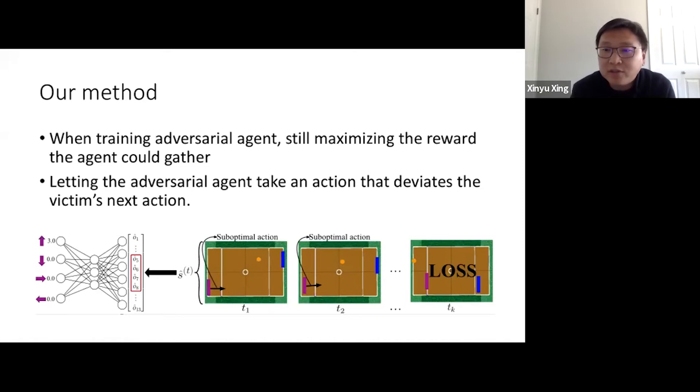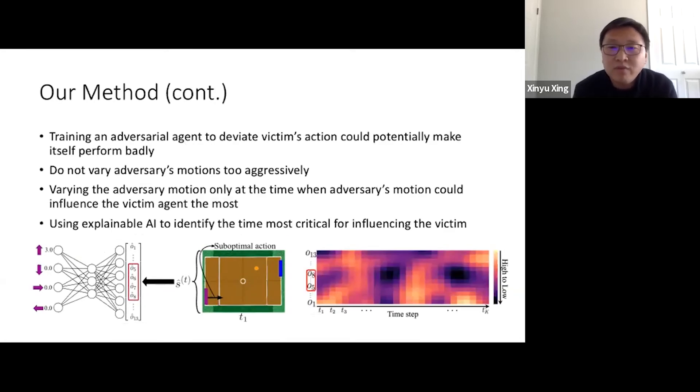However, we can also imagine the blue paddle may not perform well either. While taking aggressive motion, the blue paddle focuses on failing the purple paddle. When the orange ball is moving towards the blue paddle, it may not take the necessary action and hit the ball accordingly. To solve this problem, in this work, we do not vary adversarial motions too aggressively. Instead, we vary the adversarial motion only at the time when adversarial motion could influence the victim agent the most. To do that, we use explainable AI technique to identify the time most critical for influencing the victim.